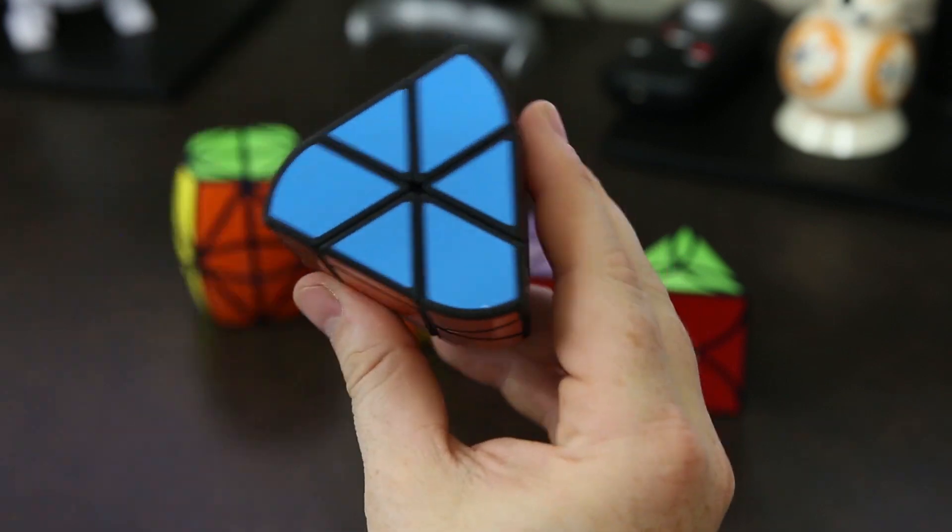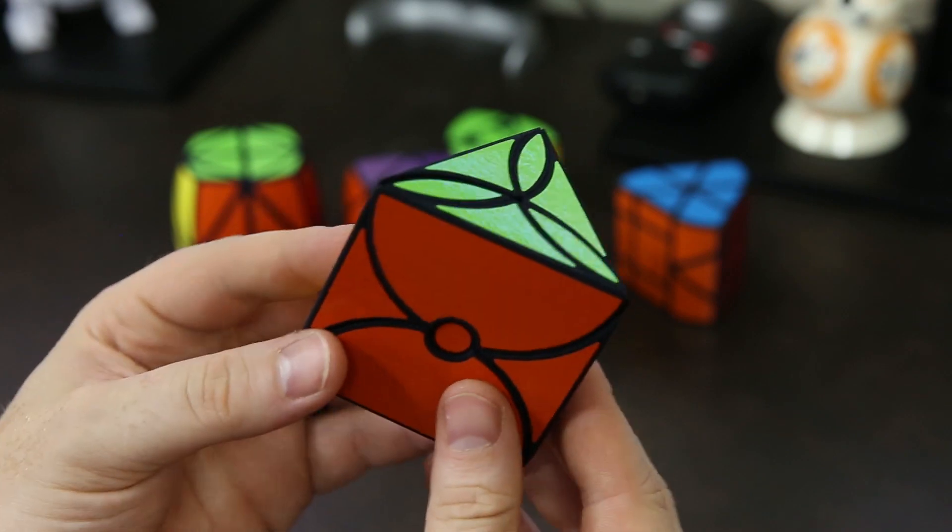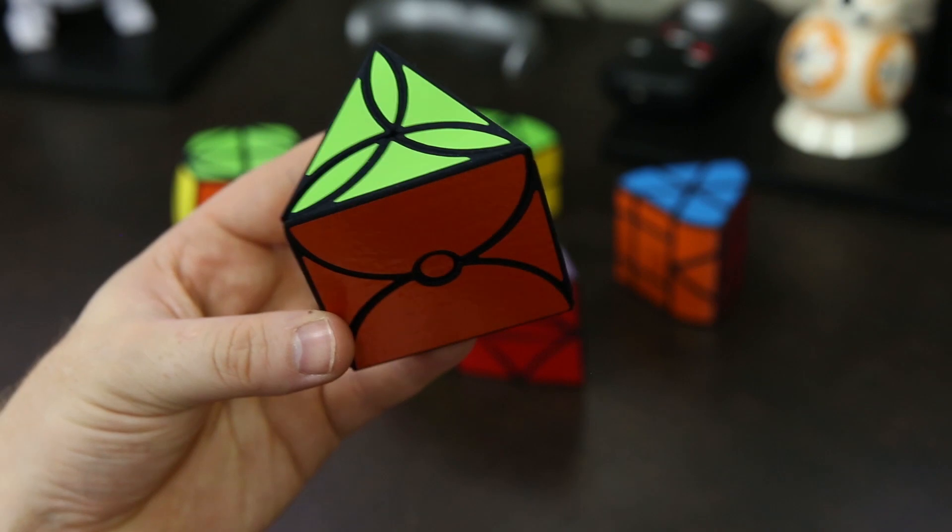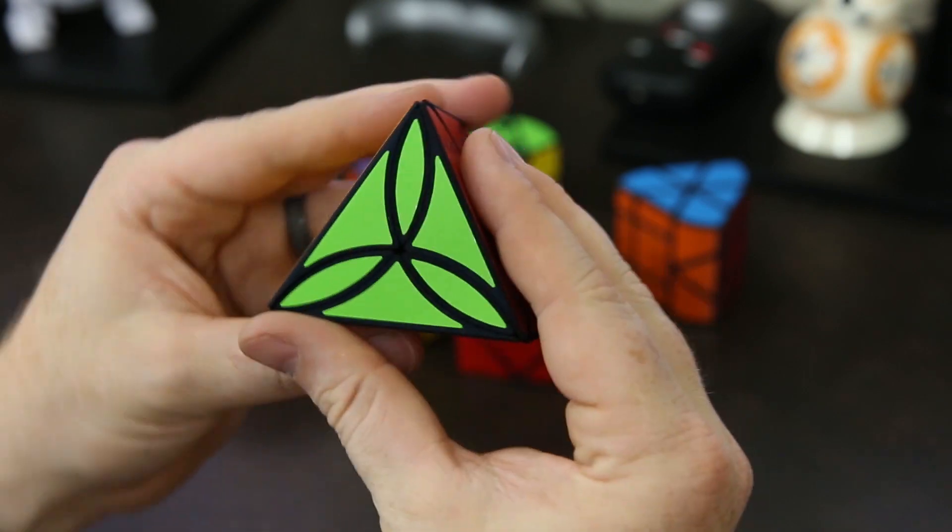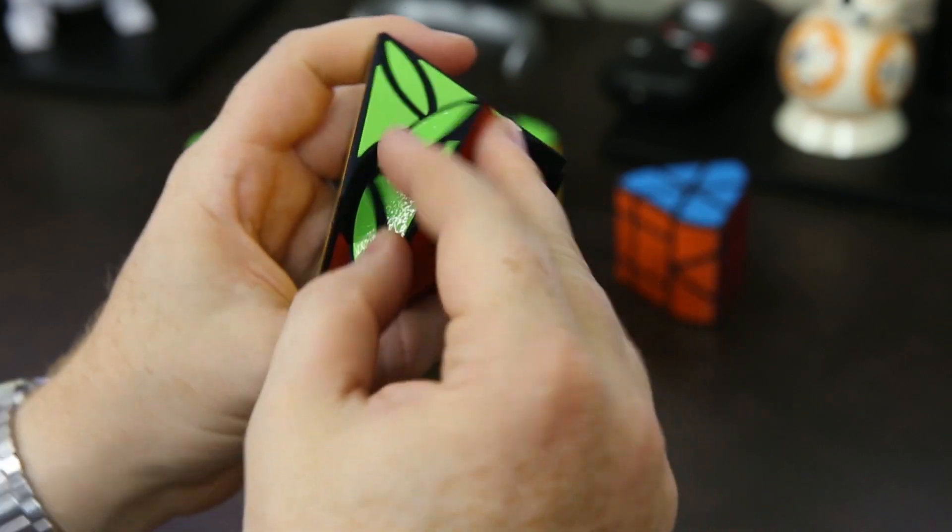The next puzzle is the tri-dot. The tri-dot is a triangular prism and it's edge turning. You can see it's a triangle turned into a prism and these edges here can turn.